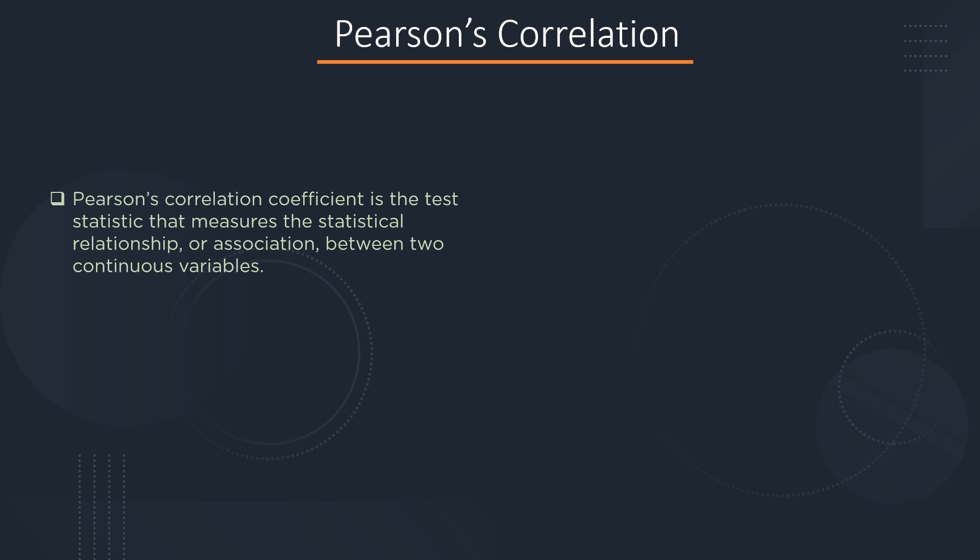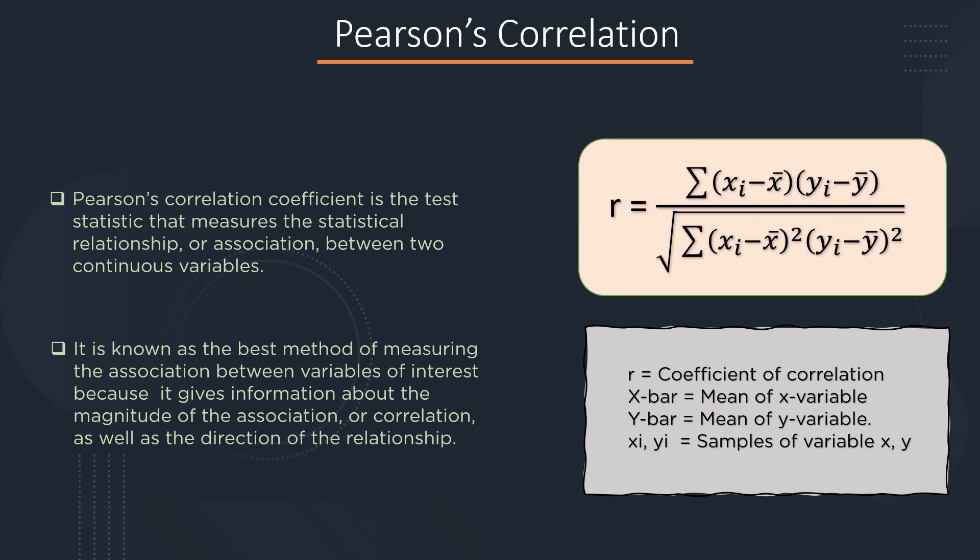Now that we know all the types of correlation, let's discuss the two major methods to calculate a correlation coefficient. The first one is Pearson's correlation. Pearson's correlation coefficient is the test statistic that measures the statistical relationship between two continuous variables. It is often denoted by R, and the formula is: R equals sigma(xi minus x-bar)(yi minus y-bar) divided by the square root of sigma(xi minus x-bar) squared times sigma(yi minus y-bar) squared. Where R is the coefficient of correlation, x-bar and y-bar are the means of variables x and y, and xi and yi denote the sample values. Pearson's correlation coefficient is the best method to measure association because it gives information about the magnitude as well as the direction of the relationship.